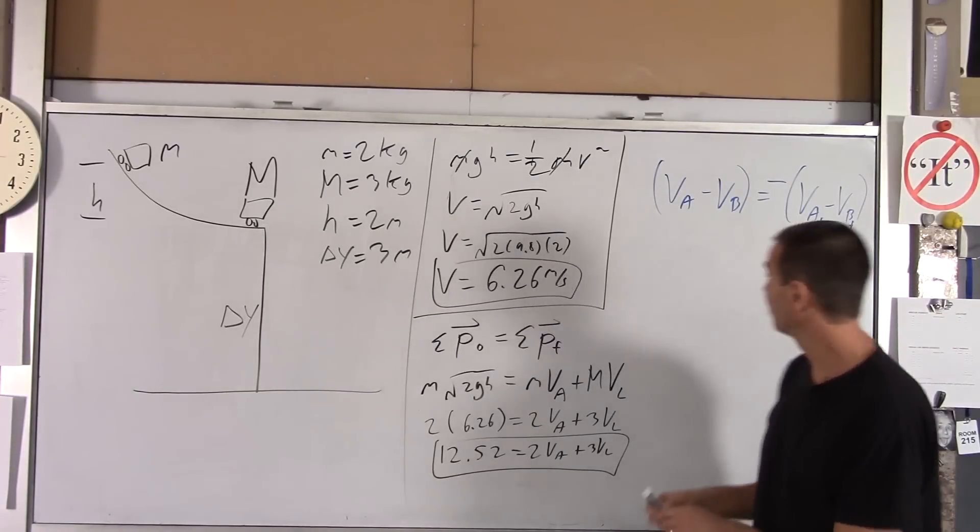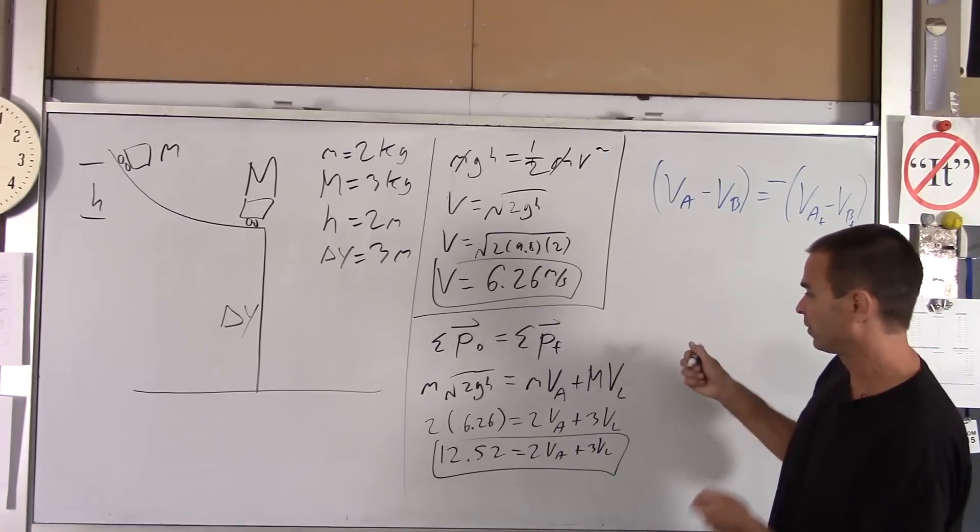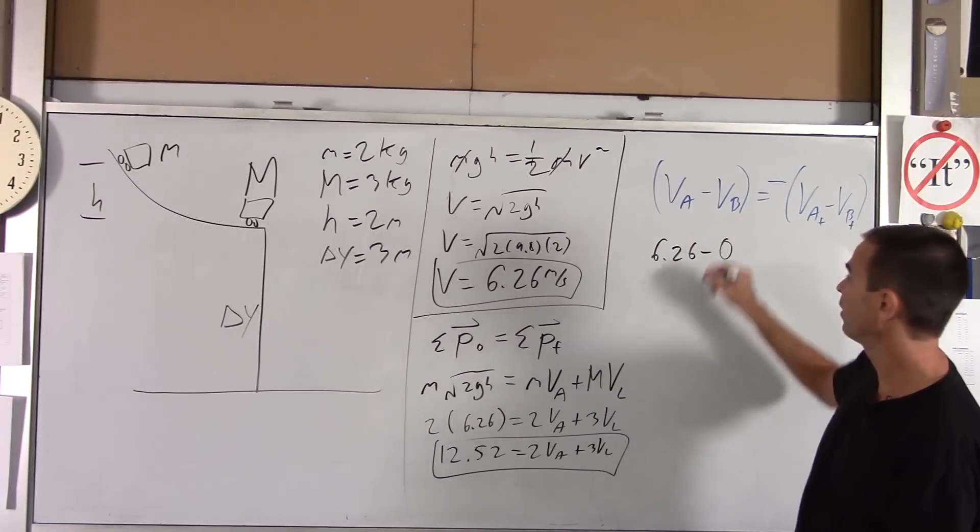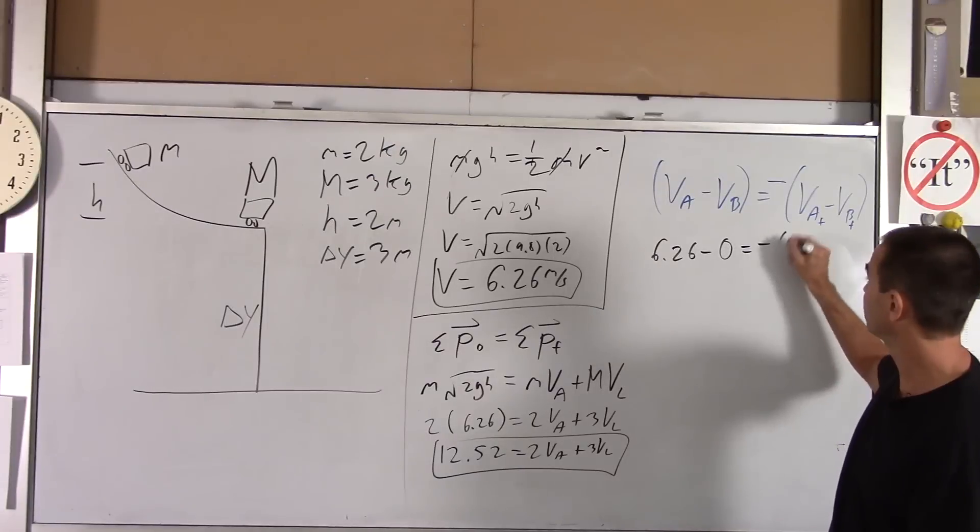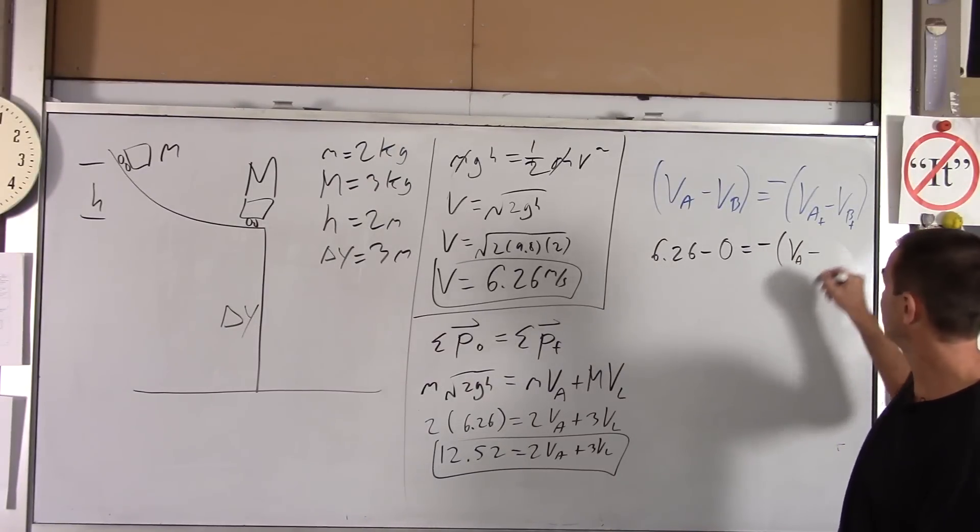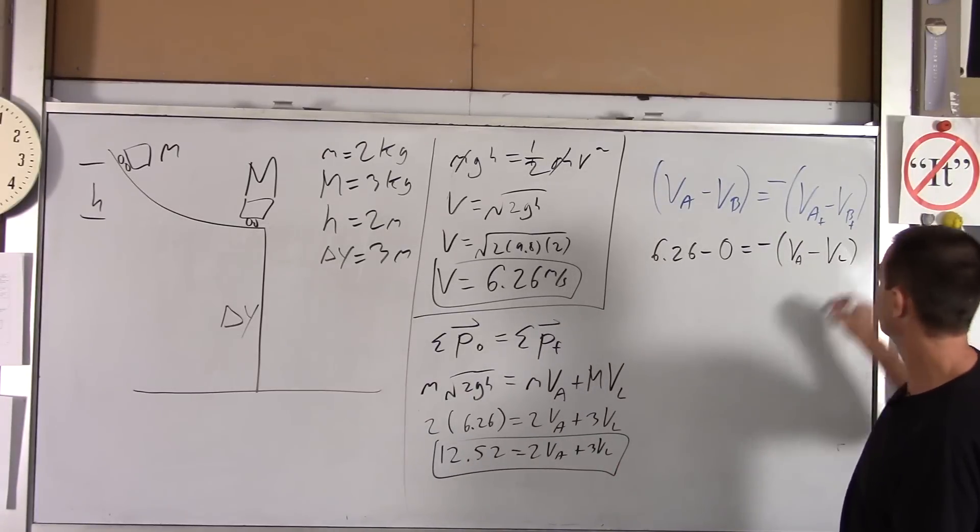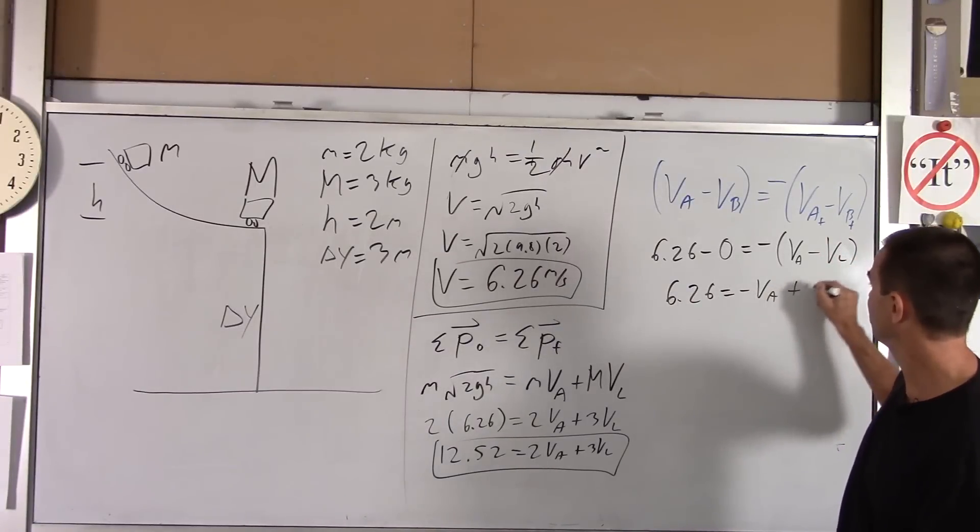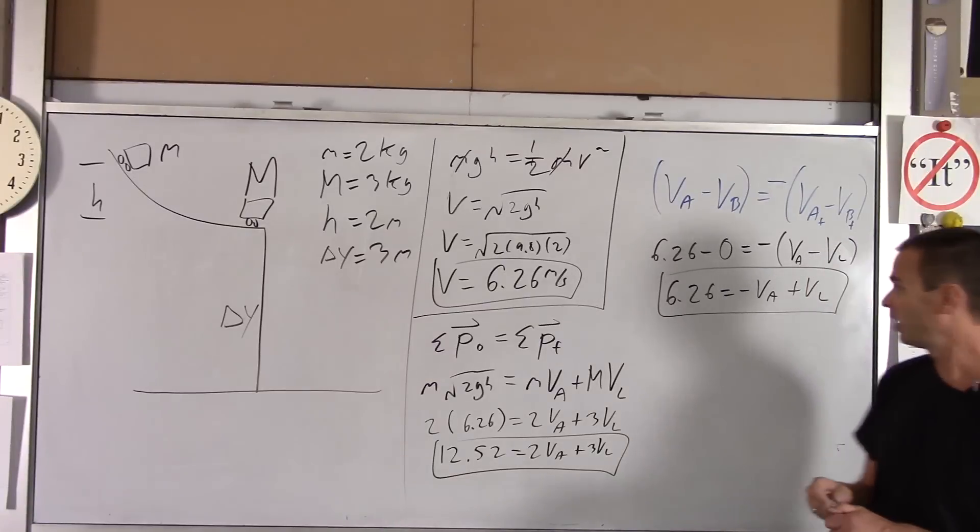Having said all that, we can kind of put variables with this. So that's vA, that was the little dude, which was 6.26, vB, well, he wasn't moving before the impact. After the impact, you've got vA final, which we called vA, minus vB final, which we called vL. And so you got 6.26 equals negative vA plus vL. So there's our second equation with the same two unknowns we can solve.